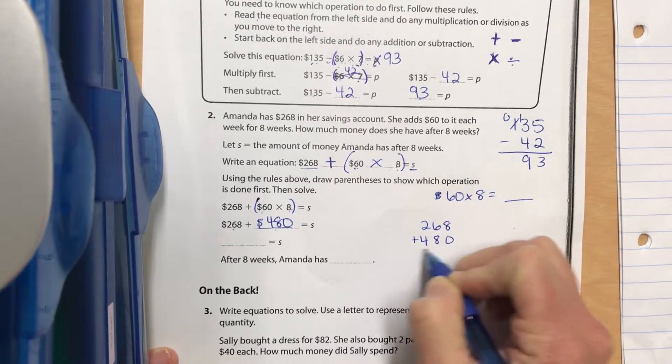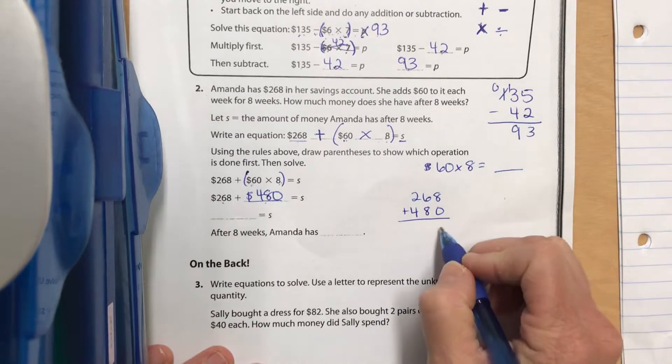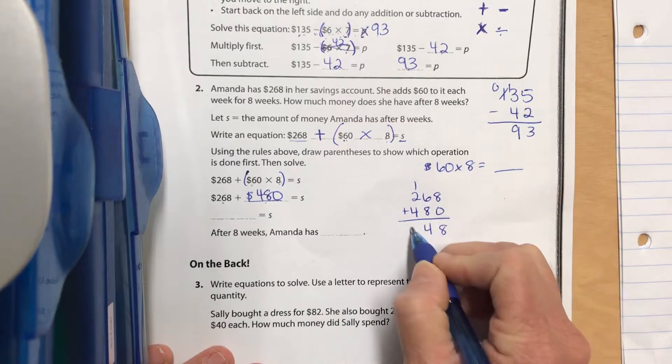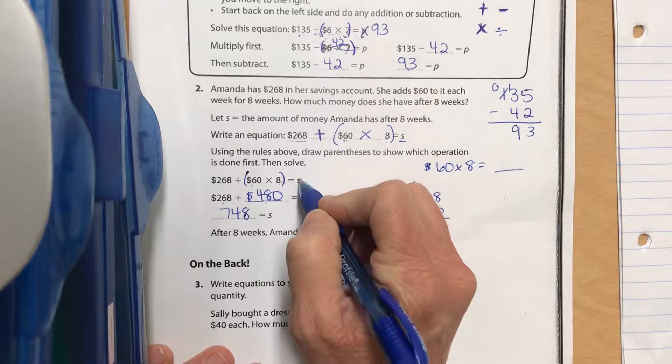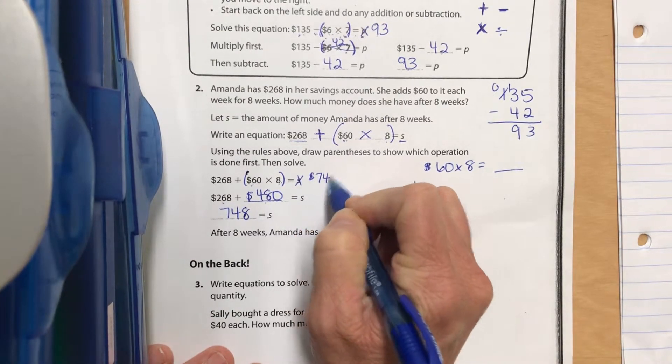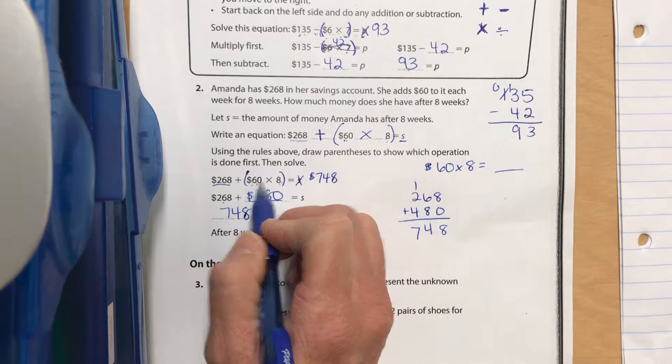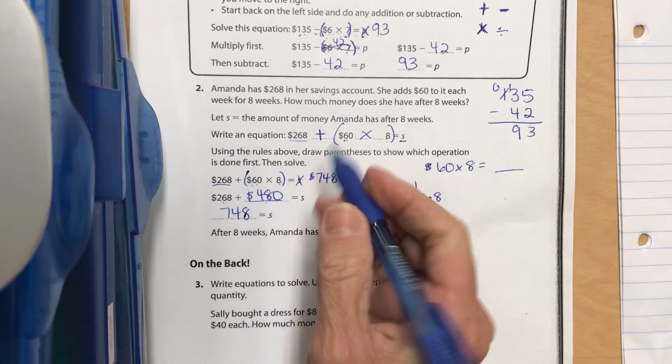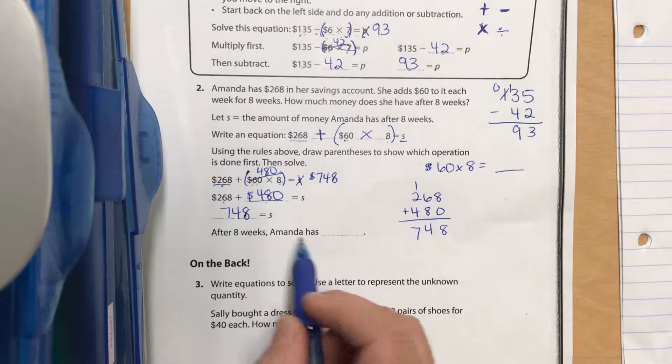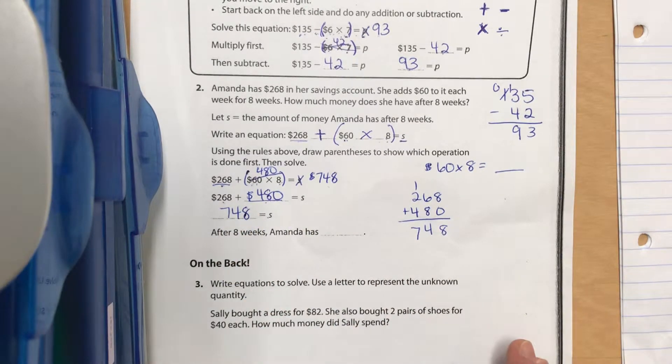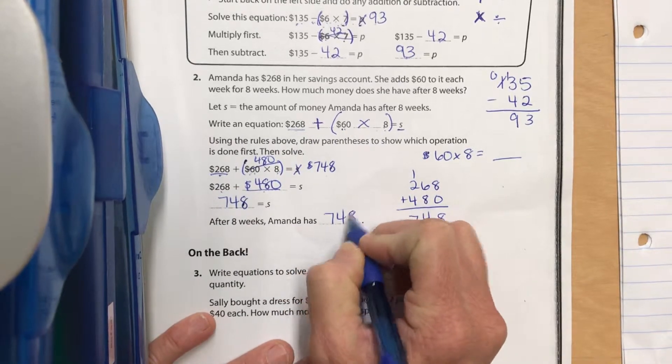We want to do $60 times eight and then add that to 268, which is the beginning amount. So 60 times eight - pause it and calculate that. You should get 480, and then 268 plus 480. Go ahead and add it together. You should get $748 equals S. She started with 268, saved $60 each week for eight weeks which is $480, and then we added 268 plus 480 and got 748.